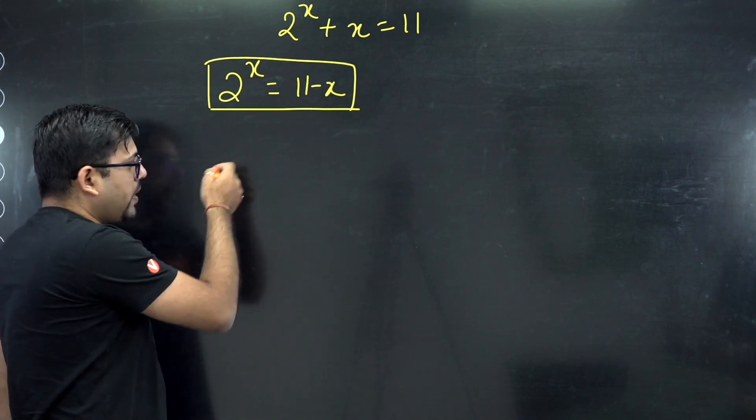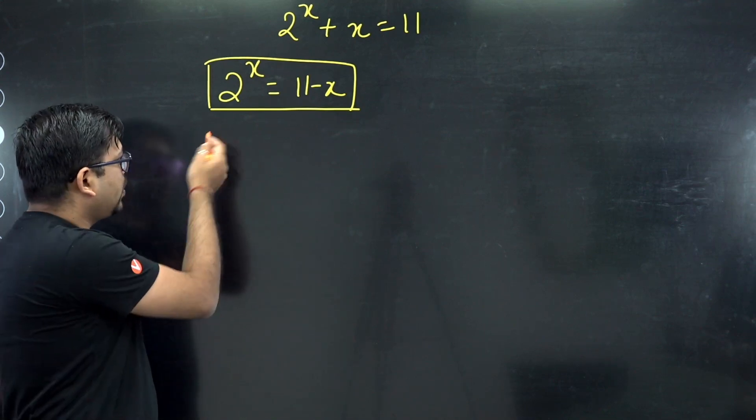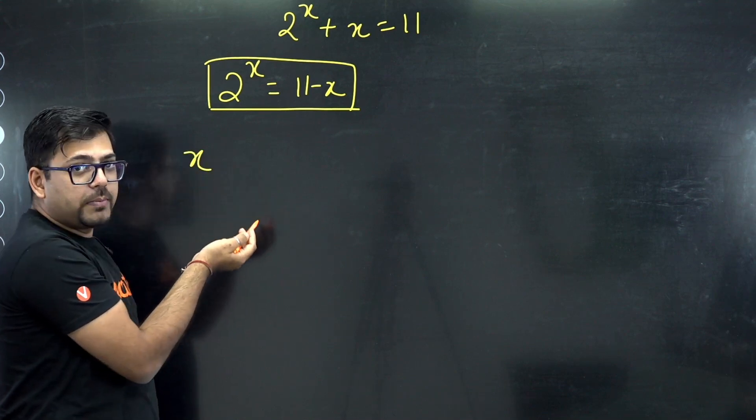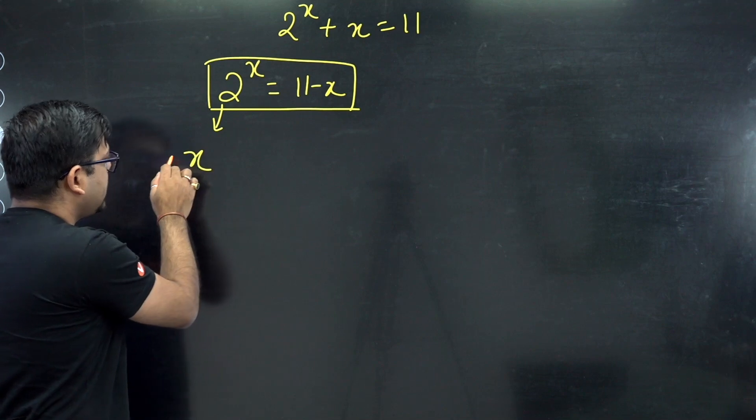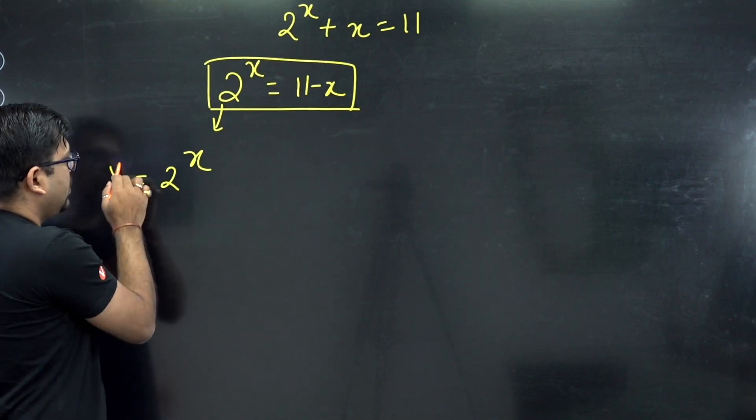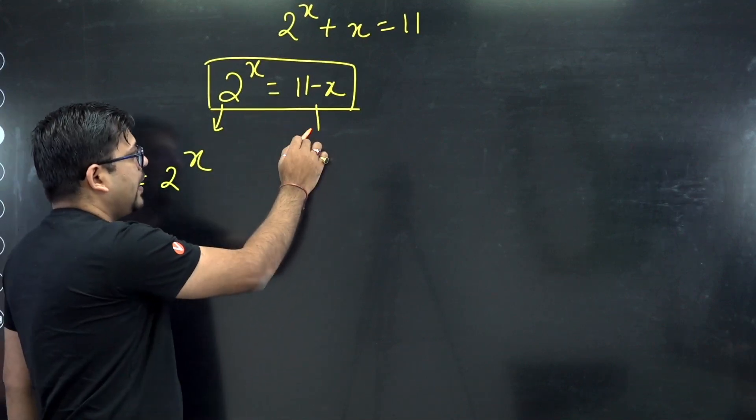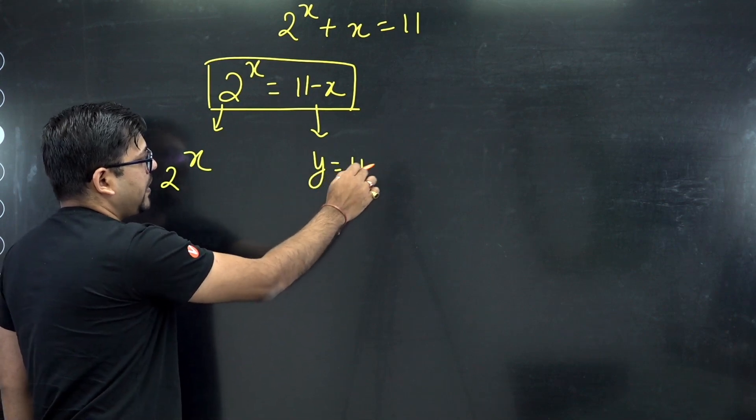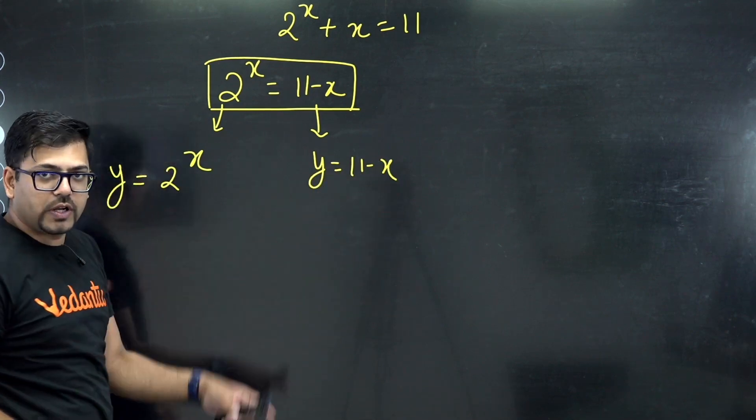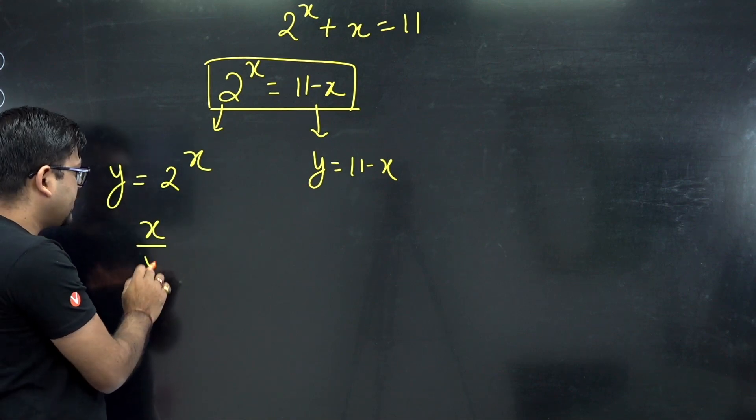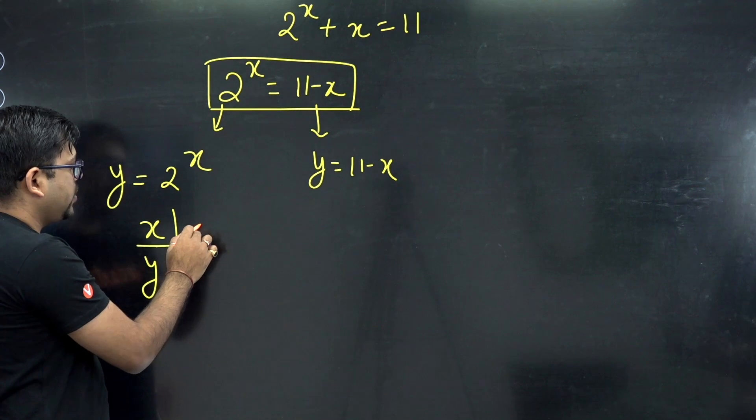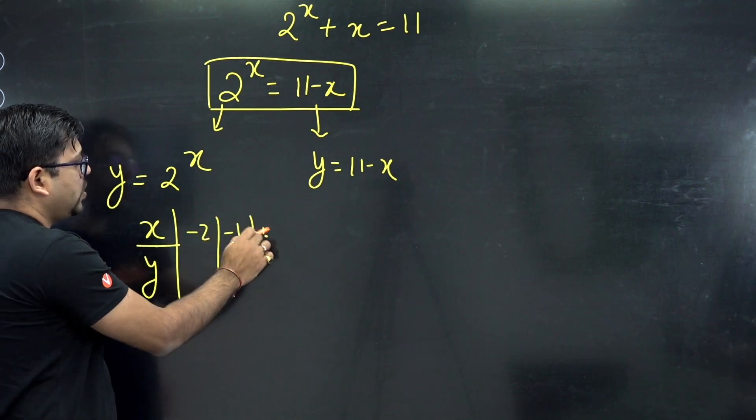So 2 raised to power x, if you make the graph for this particular function, some of you might be knowing it already and some of you might not. We will take these two functions independently: y equals 2 raised to power x and the second function y equals 11 minus x. First, if I talk about y equals 2 raised to power x, if I put some values x and y, I can put like minus 2, minus 1, 0, 1, 2.